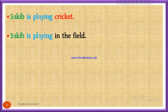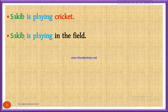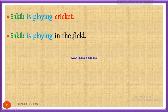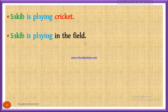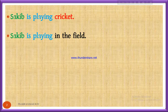Now, dear viewers, you can see that in the first sentence, Saqib is playing cricket — here we have an object. But in the second sentence, Saqib is playing in the field — here we have no object. So our today's topic is about transitive and intransitive verbs.